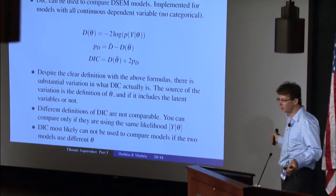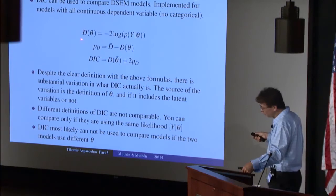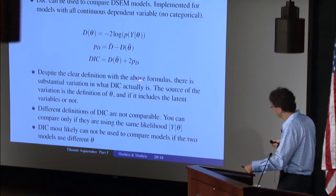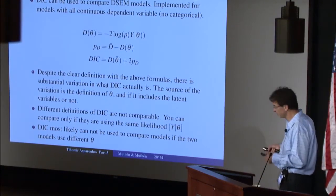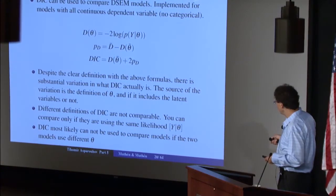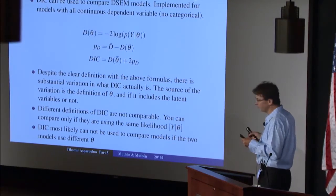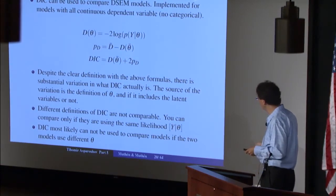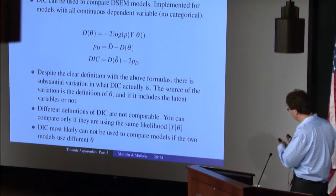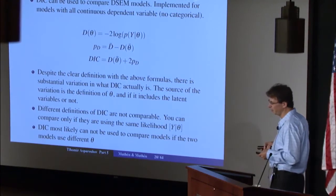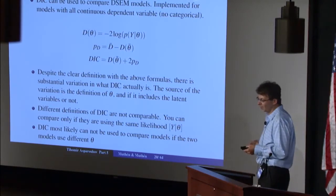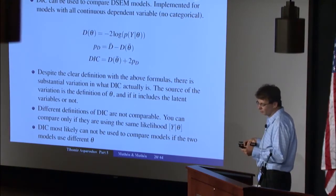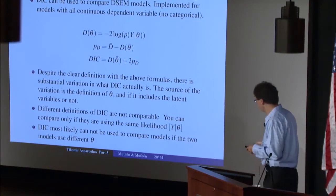These are two completely different definitions — you get completely different numbers. To compare models using the DIC, you have to use the same definition for the theta parameters, so the latent variables in the model have to be treated the same way. There are certain exceptions: latent variables with zero variances have a dual interpretation — they can be treated as a fixed parameter or as a latent variable. This flexibility allows you to use DIC to compare models with random effects. For example, a two-level model with a random effect can be compared using DIC with a model that has a fixed effect — replacing a random effect with a fixed effect can be done with the DIC.